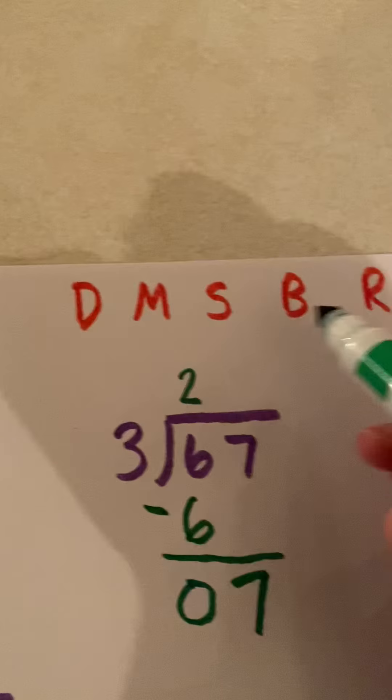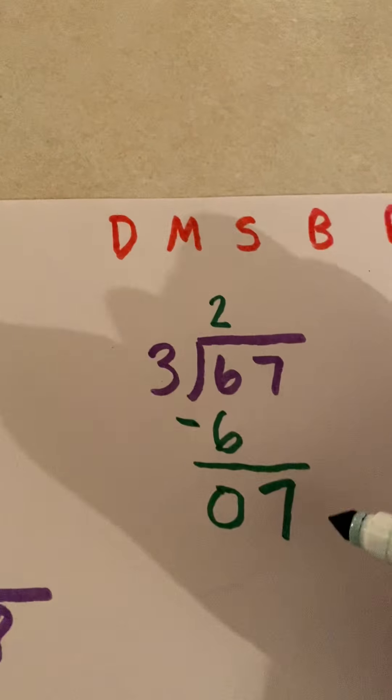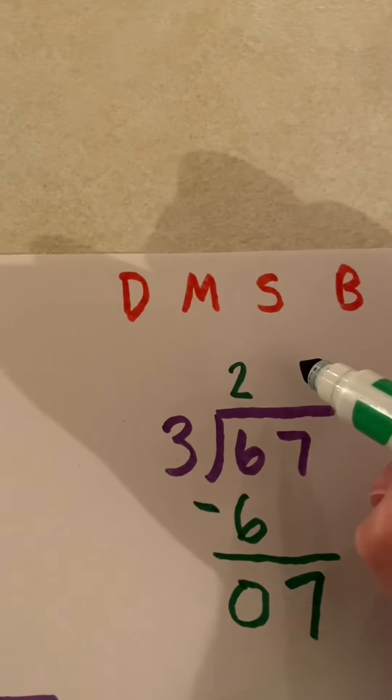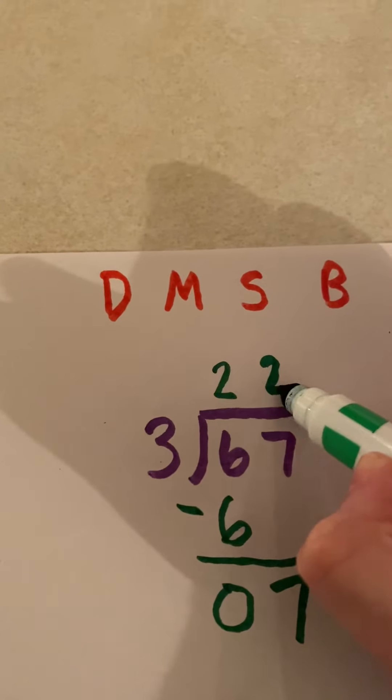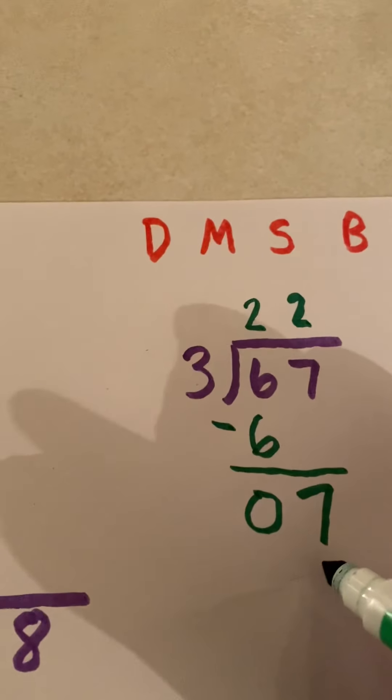R, repeat. So I'm back to dividing. How many times can I fit 3 into 7? Well, again, I know that 3 times 2 equals 6. So I multiply. 3 times 2 is 6.